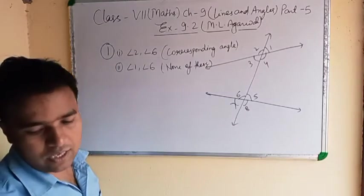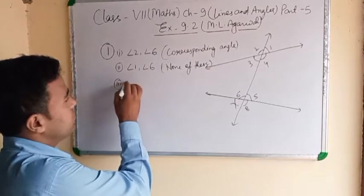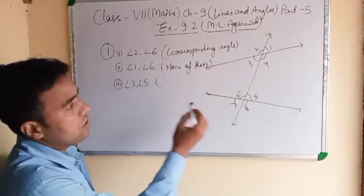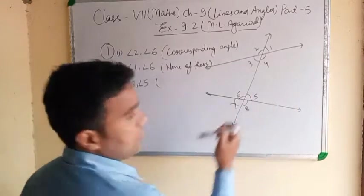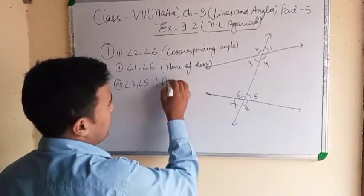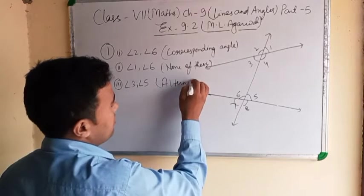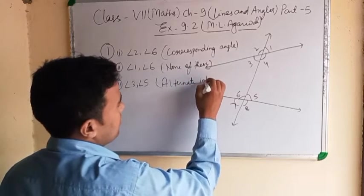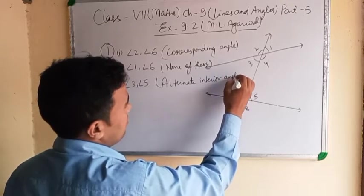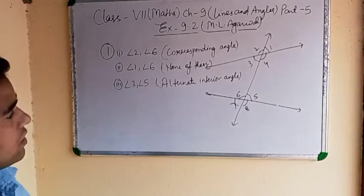The third one is angle 3 and angle 5. Angle 3 and angle 5 — it is an alternate interior angle.